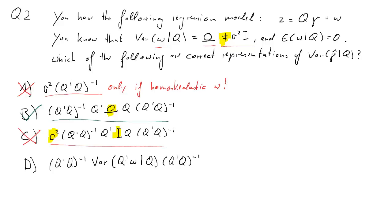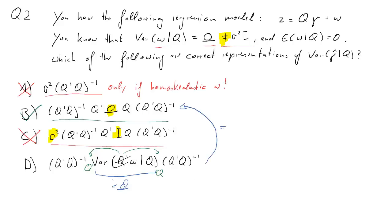C assumes that omega can be replaced by sigma squared times the identity matrix, but the question stated this was not the case, so C is incorrect. D turns out to be correct: conditioning on Q in the variance term means we can take Q outside — pre and post multiplication with Q' and Q''=Q respectively — then Q' inside the variance operator falls away, leaving the variance of W conditional on Q, which is omega. Therefore solution D is exactly the same as solution B and is correct.